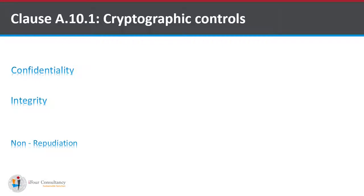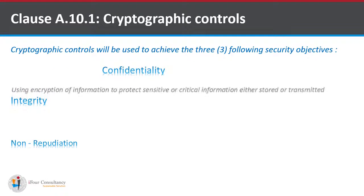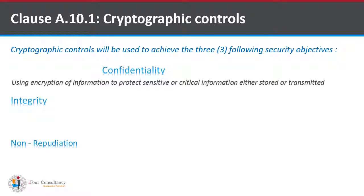Clause A.10.1 cryptographic control talks about what is used to achieve the three security objectives: confidentiality, integrity, and non-repudiation. Talking about confidentiality — using encryption of information to protect sensitive or critical information either stored or transmitted.